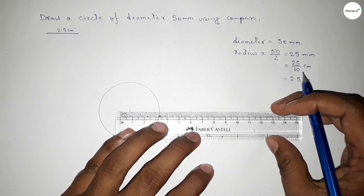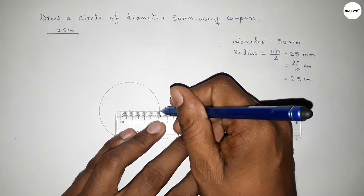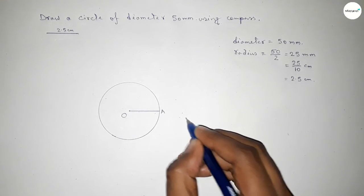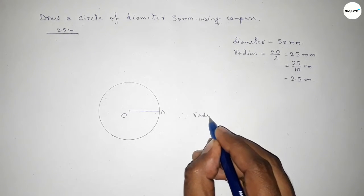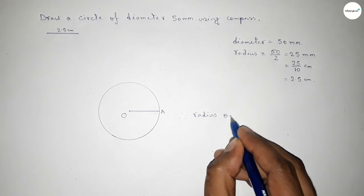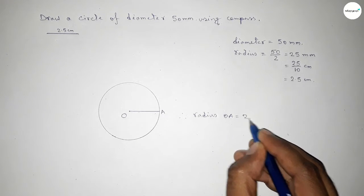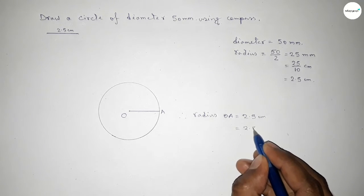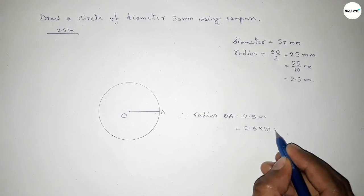Next, joining O to this point, and this is the radius of the circle. So taking here point A, therefore OA is the radius. Radius OA equals 2.5 centimeters. Now converting centimeters into millimeters, so multiplying by 10.